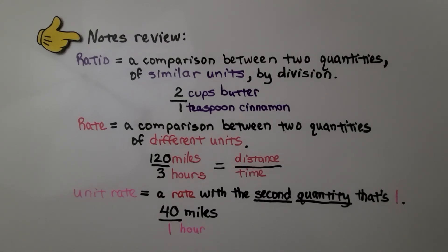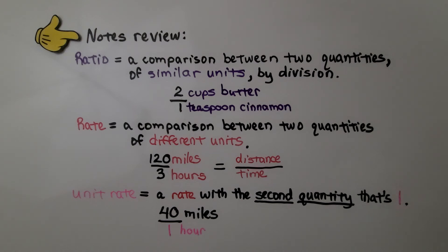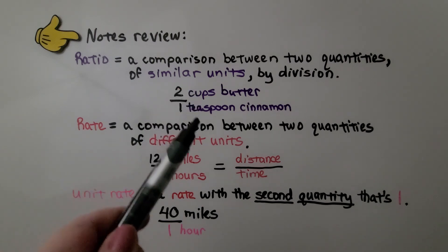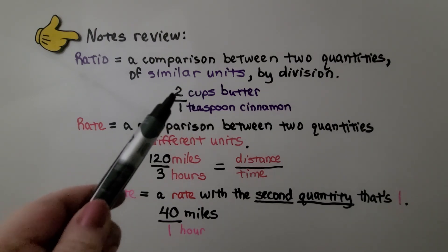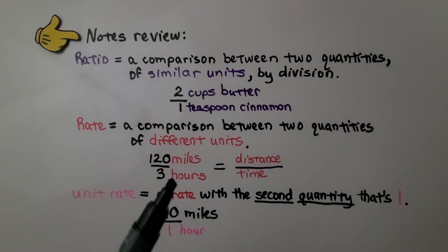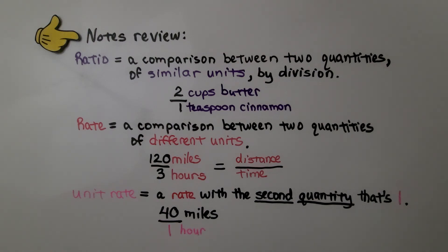Here's a quick review for your notes. A ratio is a comparison between two quantities of similar or same units by division — for example, 2 cups of butter to 1 teaspoon of cinnamon are similar cooking measure units, so that's a ratio. A rate is a comparison between two quantities of different units — miles and hours are different units, so that would be a rate. A unit rate is a rate with a second quantity of 1, so 40 miles in 1 hour would be a unit rate.